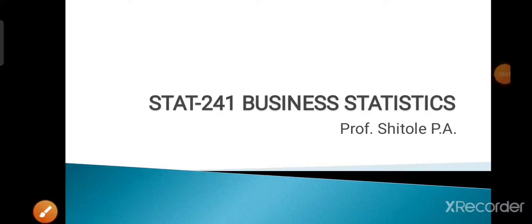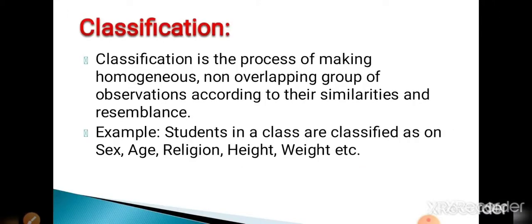Hello everyone, today we are going to learn the topic classification and its types, and some basic terminologies in statistics. Let's start with the topic classification and its types. Classification is the process of making homogeneous non-overlapping groups of observations according to their similarities and resemblances. Simply, classification is nothing but the process of making homogeneous groups that are not overlapping, made on the basis of their similarities.